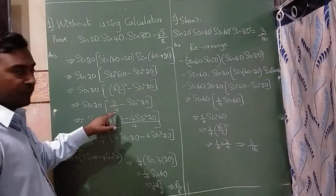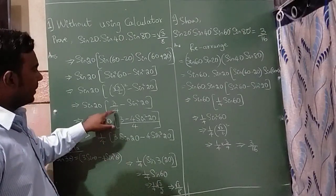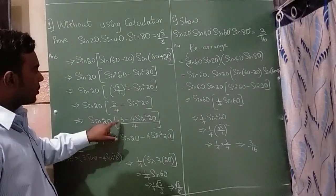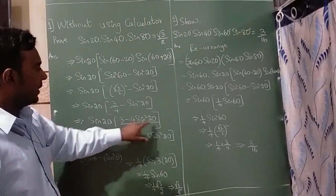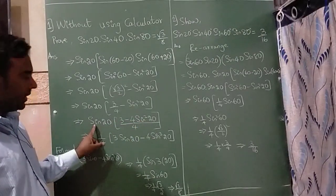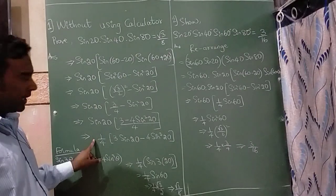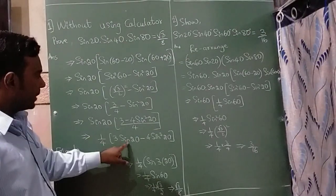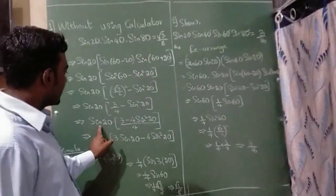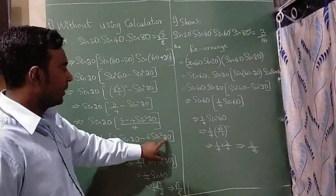I am going to multiply, so before that I am going to take LCM, 4 into this, so 3 minus 4 into sin square 20 divided by 4. This sin 20 I am going to multiply here now, 1 by 4 I have written outside, 3 sin 20 minus 4 sin sin square 20.